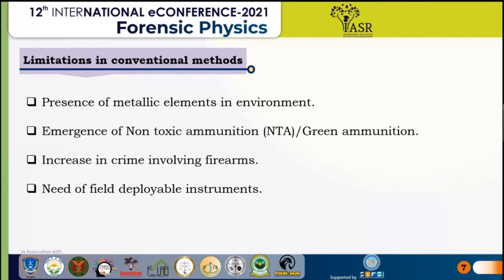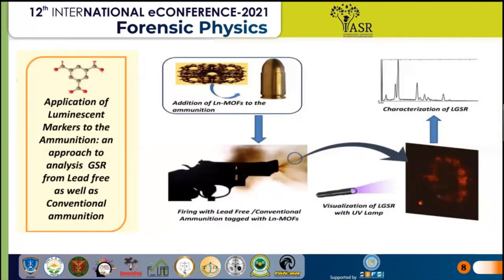The heavy inclusion of firearms in criminal activities has posed various challenges to law enforcement agencies and underlines the need for rapid analytical methods. All conventional methods require large analysis periods, imposing the need for field-deployable devices. Reviewing recent literature, it appears that two kinds of approaches have been introduced: one to counter the issue of GSR originating from NTA, and another to provide on-site detection of GSR to enhance the speed of investigation.